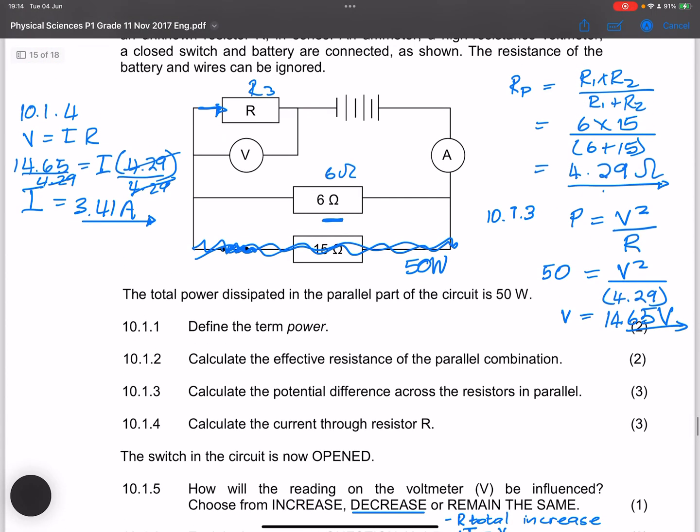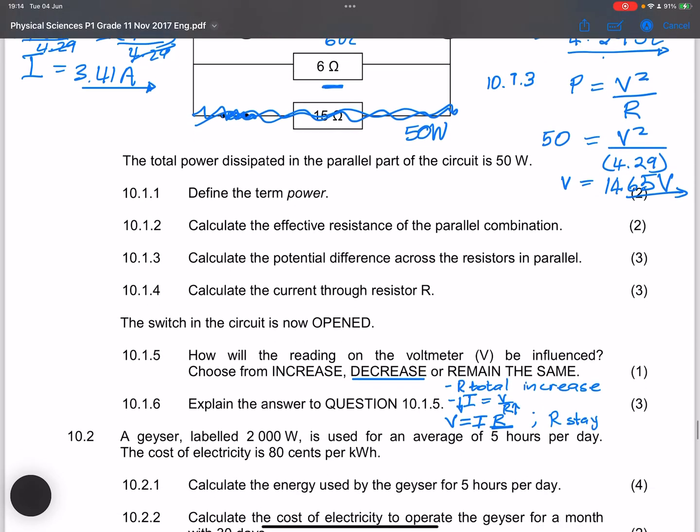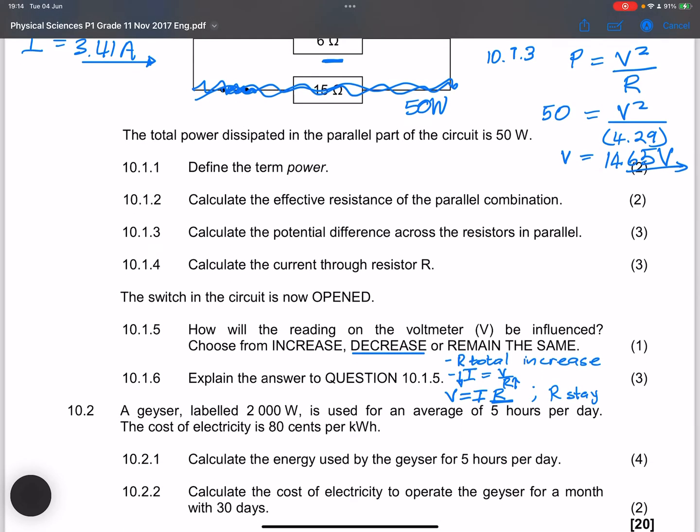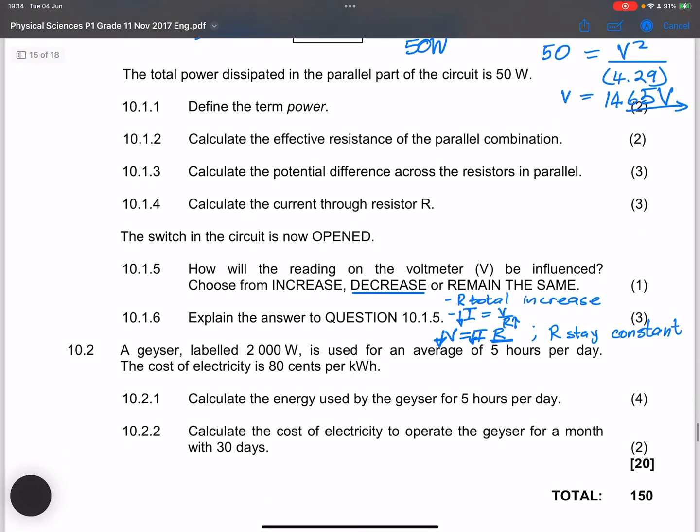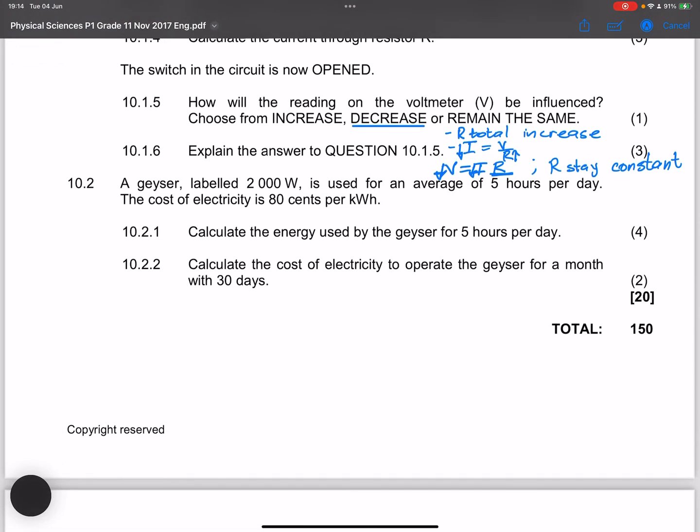The resistance of R stays constant. And so as a result, it means that our voltage will also decrease because of a decrease in current. And essentially, that is how we are going to explain that, ladies and gents.